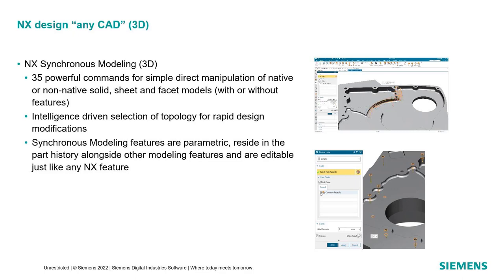The tools to allow us to do this reside within synchronous modeling. Synchronous modeling has 35 powerful commands for simple direct manipulation of both native and non-native solid, sheet, and facet models, whether these have features or not. It has intelligence-driven selection of topology which enables rapid design modifications. Synchronous modeling features are fully parametric, reside in the part history alongside all other modeling features, and are fully editable just like any other NX feature.